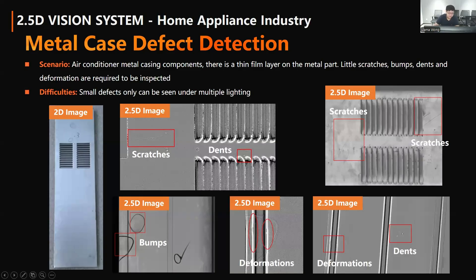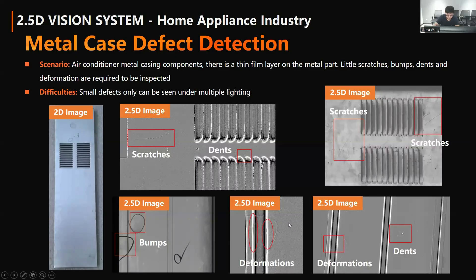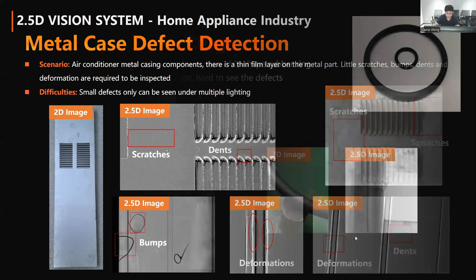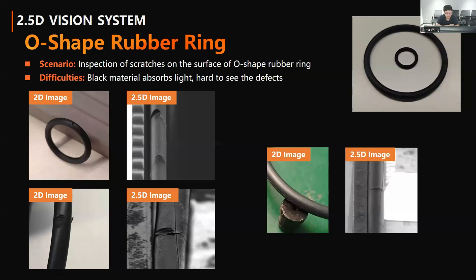The third case is metal case detection — specifically the metal case of air conditioners with a thin film layer on the metal part. It is hard to detect scratches, bumps, dents, and other deformations. But with our 2.5 dimensional system, using one light and one camera, we can find all of these defects. The fourth case is an O-shaped ring from the automotive industry. The challenge is that it is a black material surface, making defects hard to see with normal vision solutions. With our 2.5 dimensional system, the scratches are very obvious.